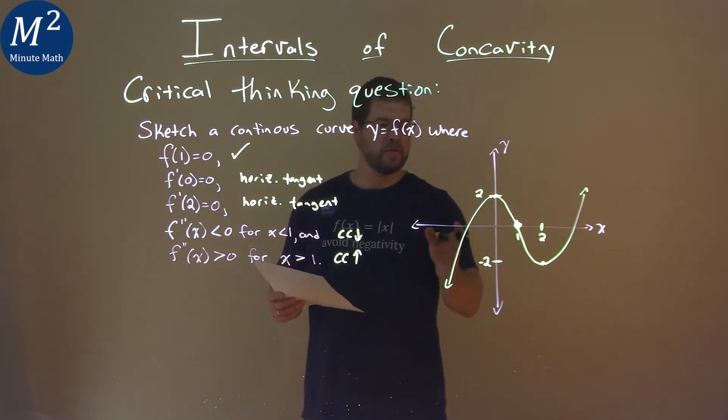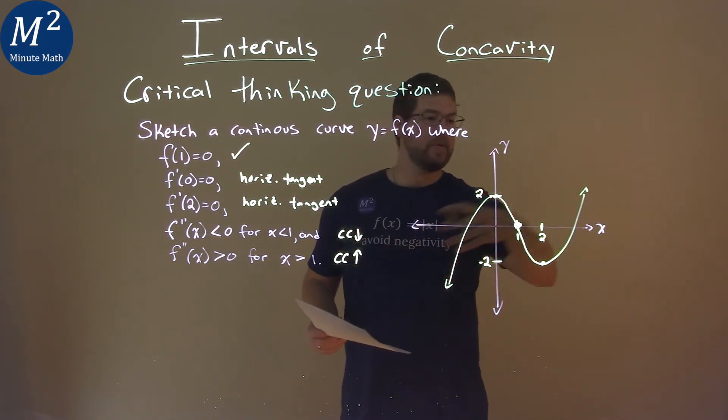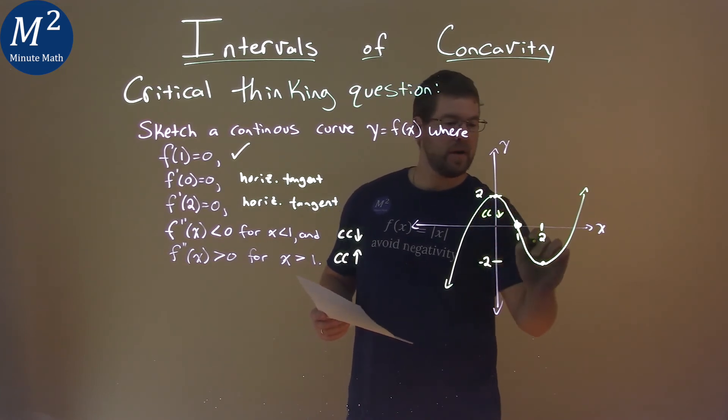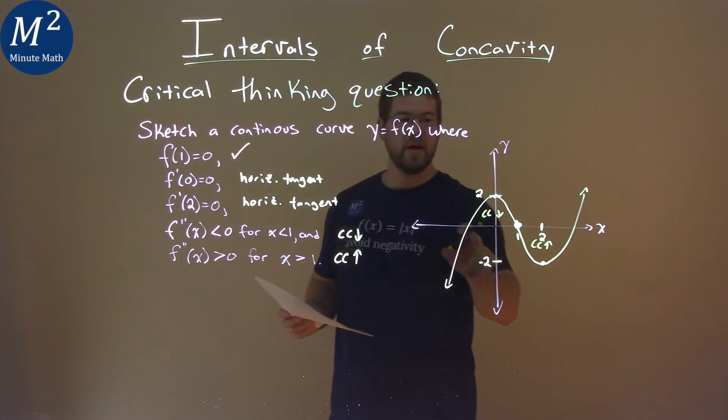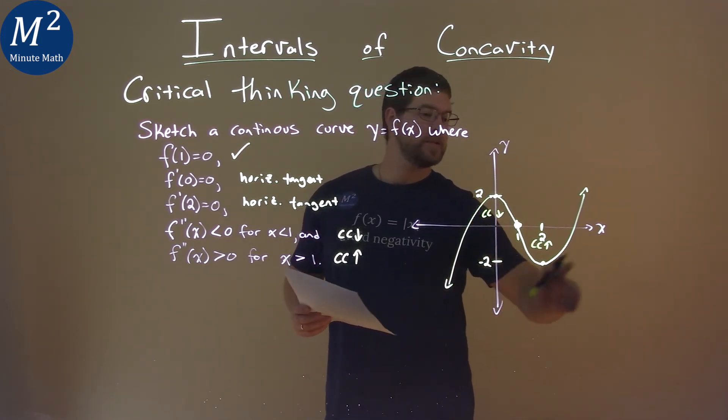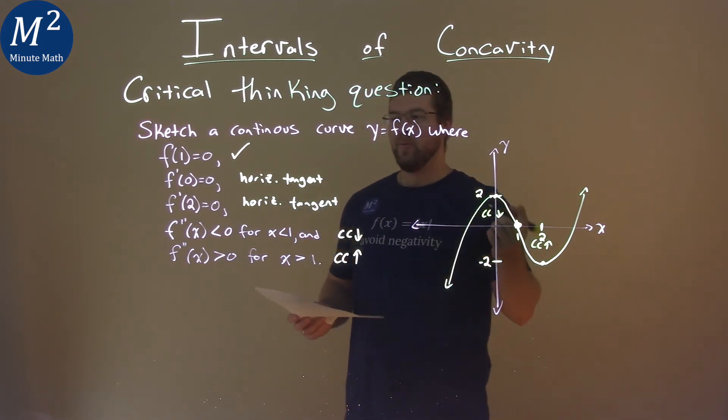Now notice here on our intervals, we're continuous anywhere, negative infinity to positive infinity. Right here, we're concave down, and we're concave up here on our interval from negative infinity to 1, and then concave up from 1 to positive infinity. We have a point of inflection right there at 1.